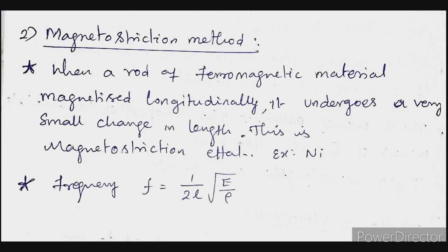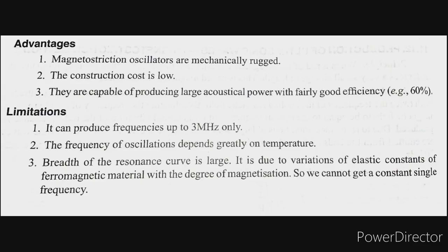The frequency formula for the magnetostriction method is: f = 1/(2L) × √(E/ρ), where L is the length of the rod, E is Young's modulus, and ρ is the density of the rod. Advantages: magnetostriction oscillators are mechanically robust, construction cost is low, and the parts are inexpensive.